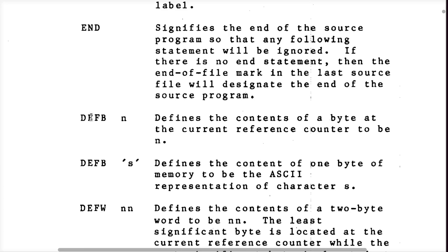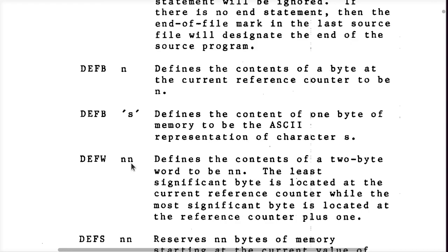DEFB — you can also just say DB. This is a define byte, and you can put any 8-bit hex, decimal, or other value constant here. You can put quotes around it to create a single ASCII character, or put double quotes around it. In the assembler we're using, if you put double quotes around a multi-character string, it'll just keep on putting many characters into one big string.